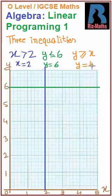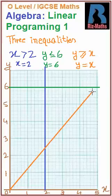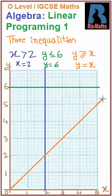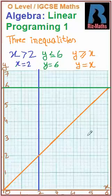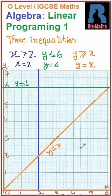And the third one, y equals x. As we know, it is a straight line passing through the points (1,1), (2,2), (3,3). So it will be like this. So this is y equals x, this is y equals 6, and this vertical line is x equals 2.